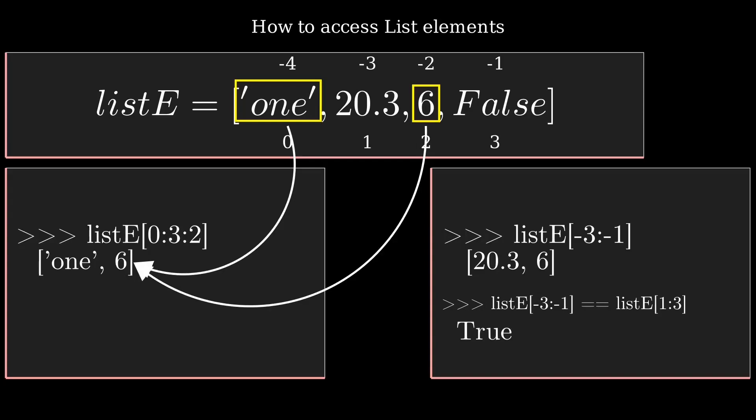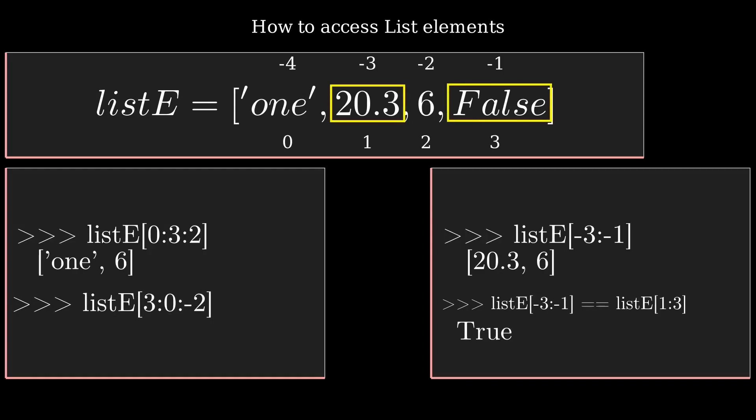It will return the elements from index zero and two only. If you pass a negative stride, it will first go to index three (which is False), then go to index one, skip the two element (which is six), and finally return False and 20.3.